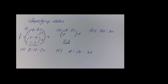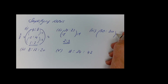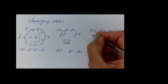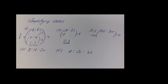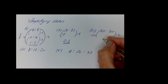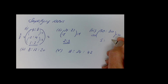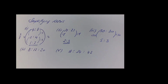For 50:30, the highest number that divides into both is 10. So 10 into 50 goes 5 times and 10 into 30 goes 3 times, giving the simplified ratio 5:3.